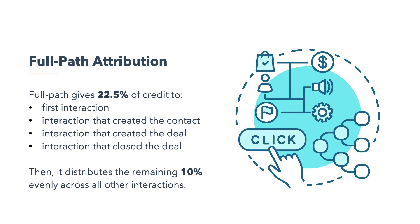Full path gives 22.5% of credit to the first interaction, to the interaction that created the contact, to the interaction that created the deal, and to the interaction that closed the deal. It then evenly distributes the remaining 10% across all other interactions. Use a full path attribution model to understand how your marketing impacts revenue generation.